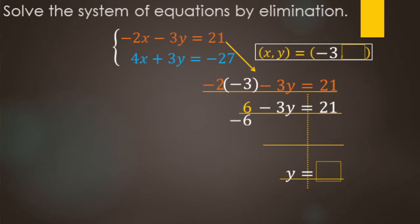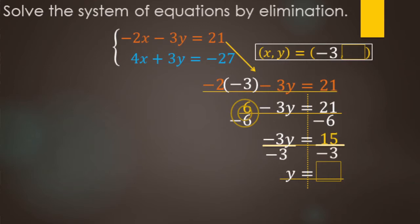We're solving for y, so we undo the 6 with minus 6 to both sides. 6 minus 6 is 0, leaving minus 3y equals 15. To isolate y, undo multiply by negative 3 with divide by negative 3. Negative 3 divided by negative 3 is 1y. 15 divided by negative 3 — positive divided by negative is negative — gives us negative 5. So the ordered pair that makes both equations true is negative 3, negative 5.